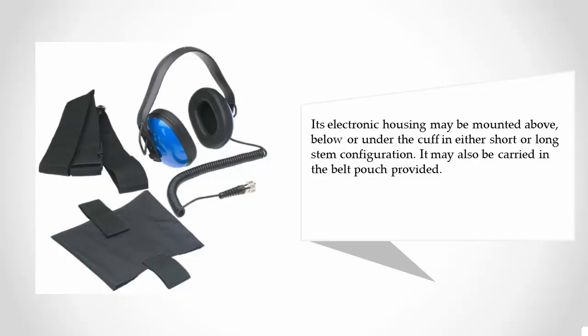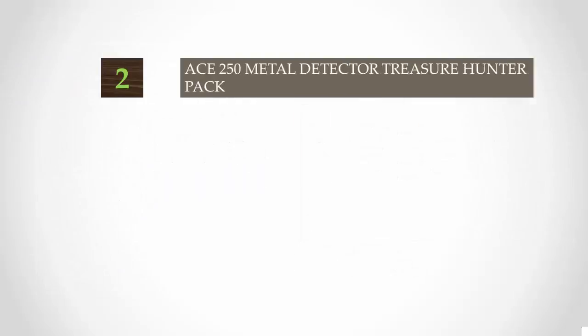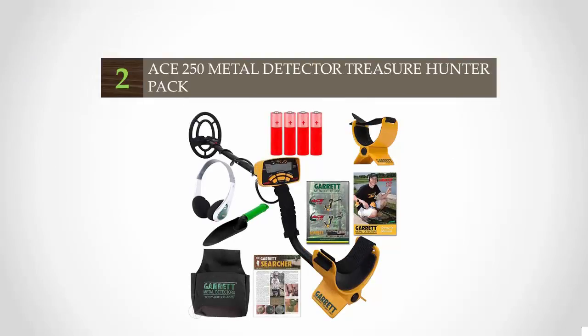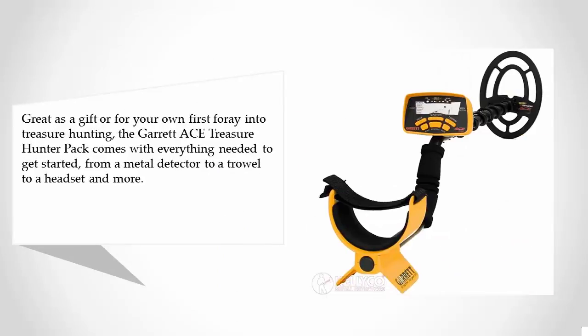It may also be carried in the belt pouch provided. At number two, great as a gift or for your own first foray into treasure hunting, the Garrett Ace Treasure Hunter Pack comes with everything needed to get started, from a metal detector to a trowel to a headset and more.